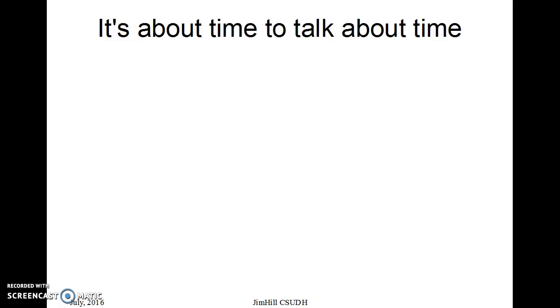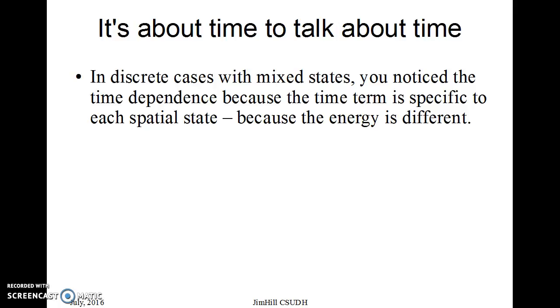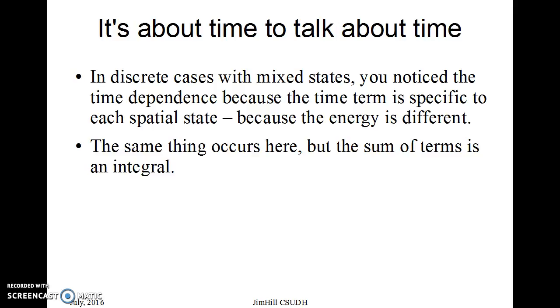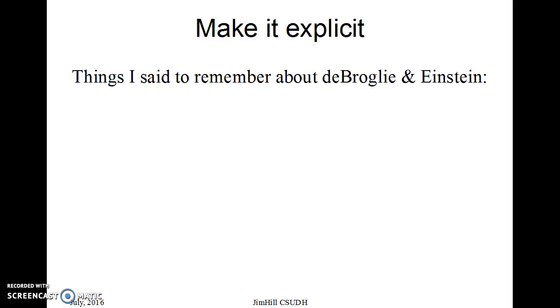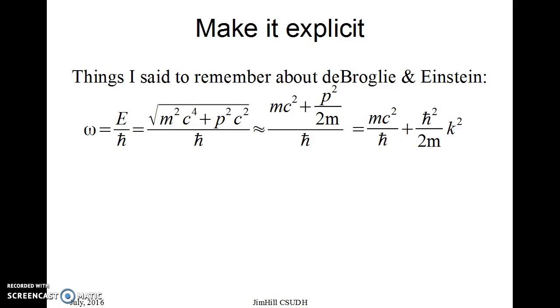So we got to move on and start talking about the time term. What happens when I let this sit there? When I had discrete cases with mixed states, as you should have run into in the previous course, you saw the time dependence act because the time term specific to each different spatial state, the energy is different. Same thing here, but the sum is an integral, so it might be more complicated. So we need to go back and put the time terms in. The tricky part here: ω is implicitly a function of k, but we can make it explicit. I told you to remember about de Broglie and relativity. We can write ω in terms of E, we can write E in terms of p, and we can write p then in terms of k. So I've got ω in terms of k as some constant, which I'll call ωₘ, the mass-related part of omega, and some k-dependent piece: ℏ²k²/2m.